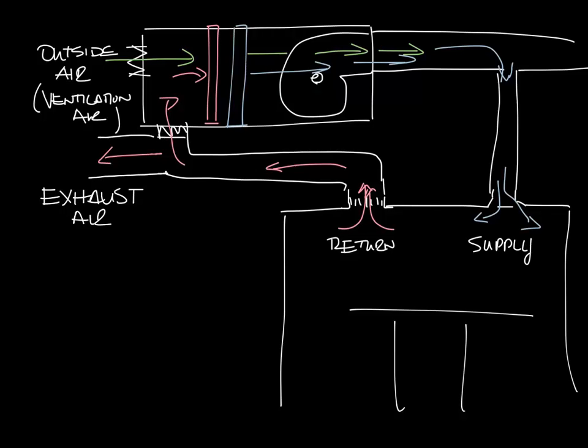So now you see our outside air which is our ventilation air, our exhaust air, down here is our supply air, and our return air. And I probably shouldn't have extended our green outside air arrows down into the space because that's mixed air that's coming into the space.